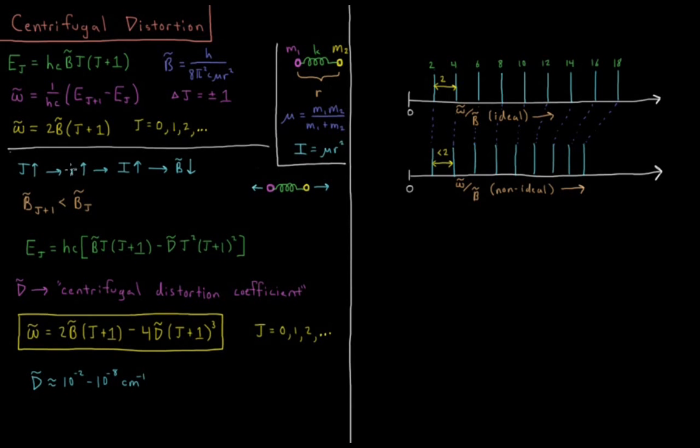Just as in the previous video, when the bond length goes up, the moment of inertia goes up. When the moment of inertia goes up, which is in the denominator of our rotational constant, our rotational constant goes down, and that means our energy levels are going to get closer together.